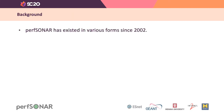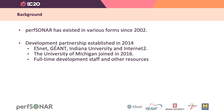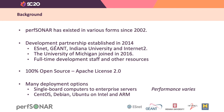By way of background, PerfSonar has existed in various forms since about 2002. In 2014, ESNet, Geant, Indiana University, and Internet2 formed a development partnership, which was joined by the University of Michigan in 2016. All five institutions contribute full-time development staff and other resources. PerfSonar is 100% open source, released under the Apache License 2.0. There are lots of different ways you can deploy it — PerfSonar is running on everything from single-board computers to enterprise servers. The system will run on CentOS, Debian, and Ubuntu on various combinations of Intel and ARM processors.